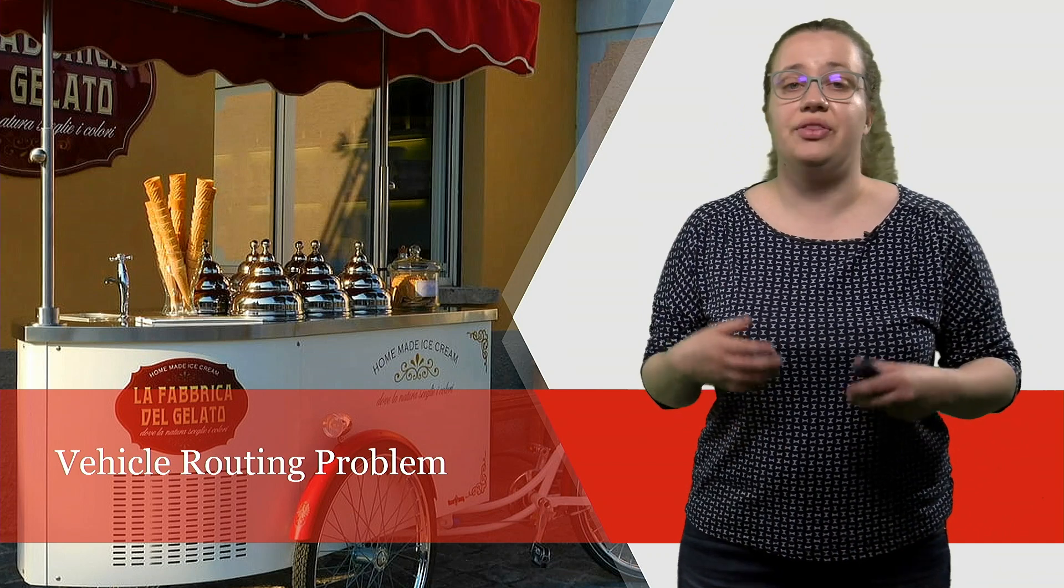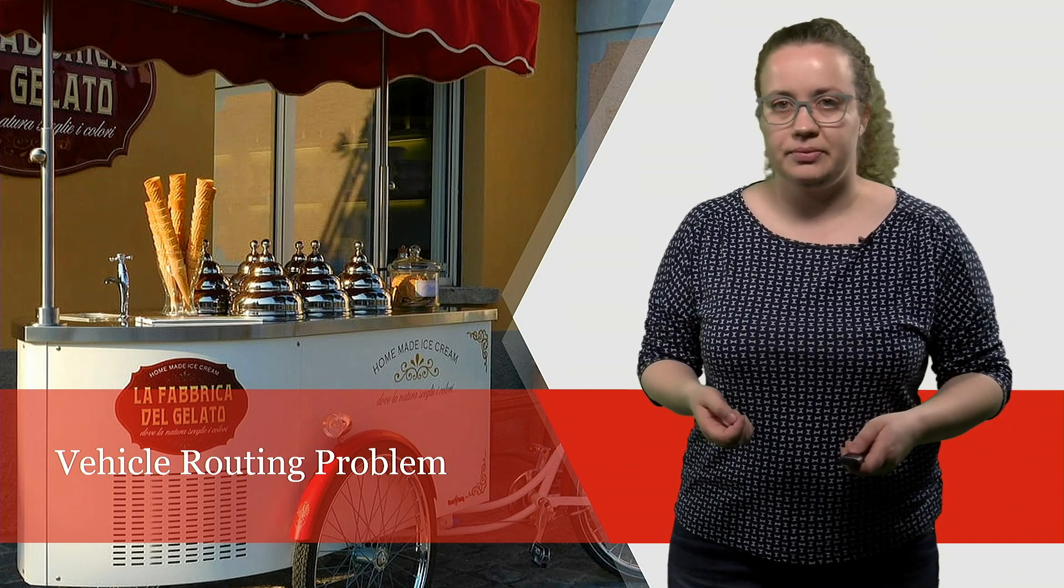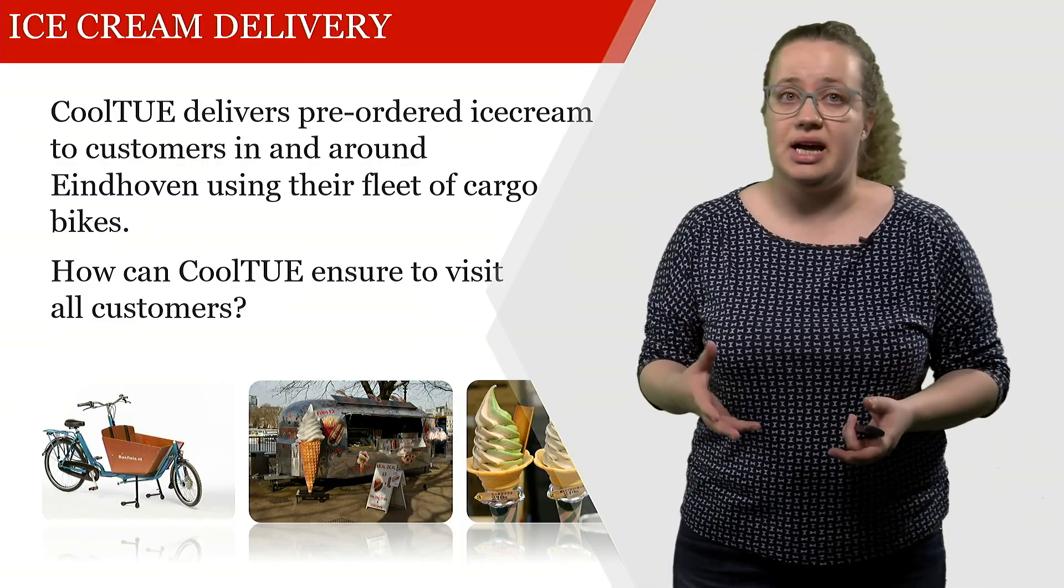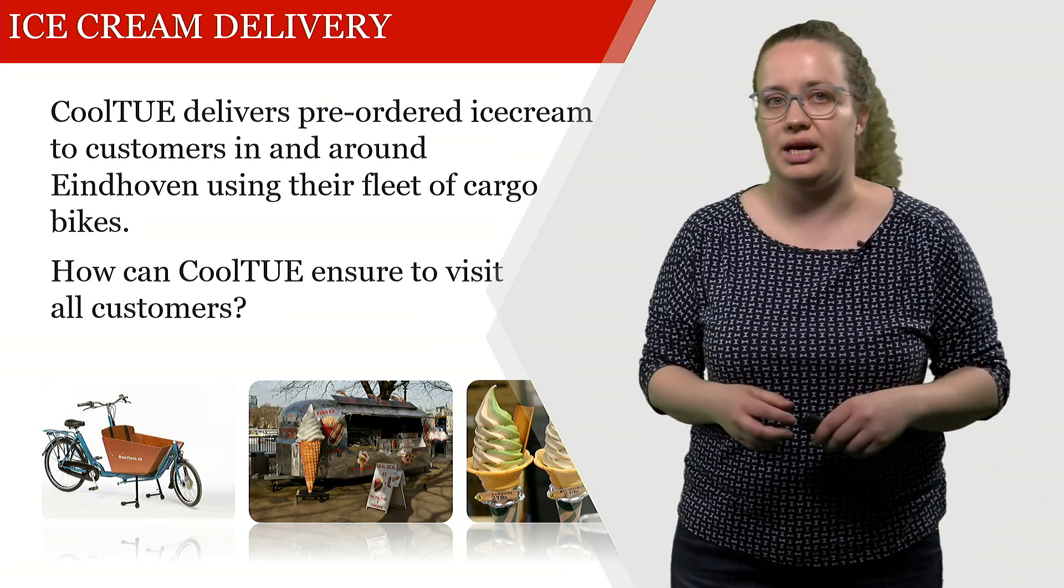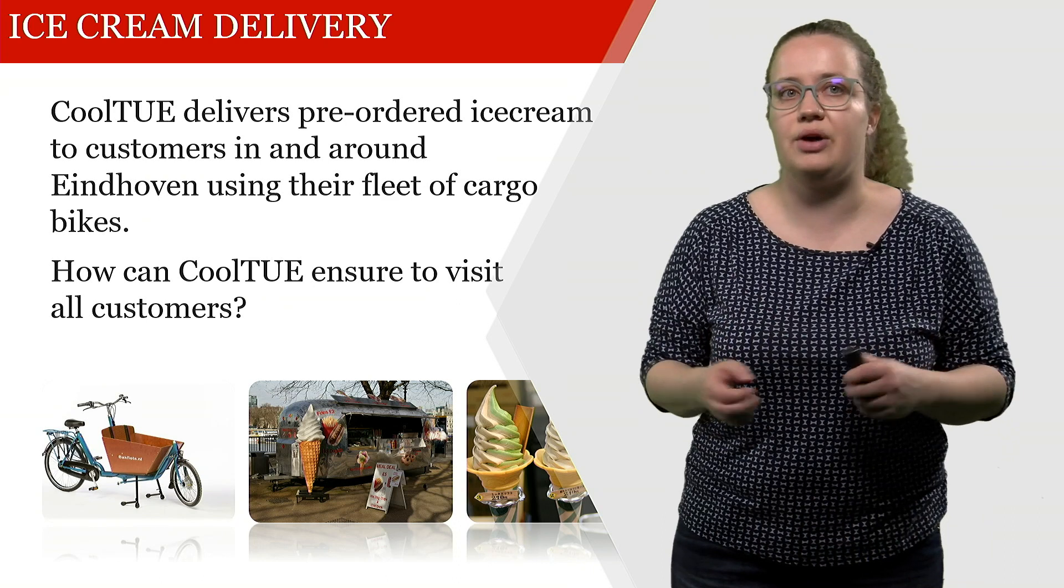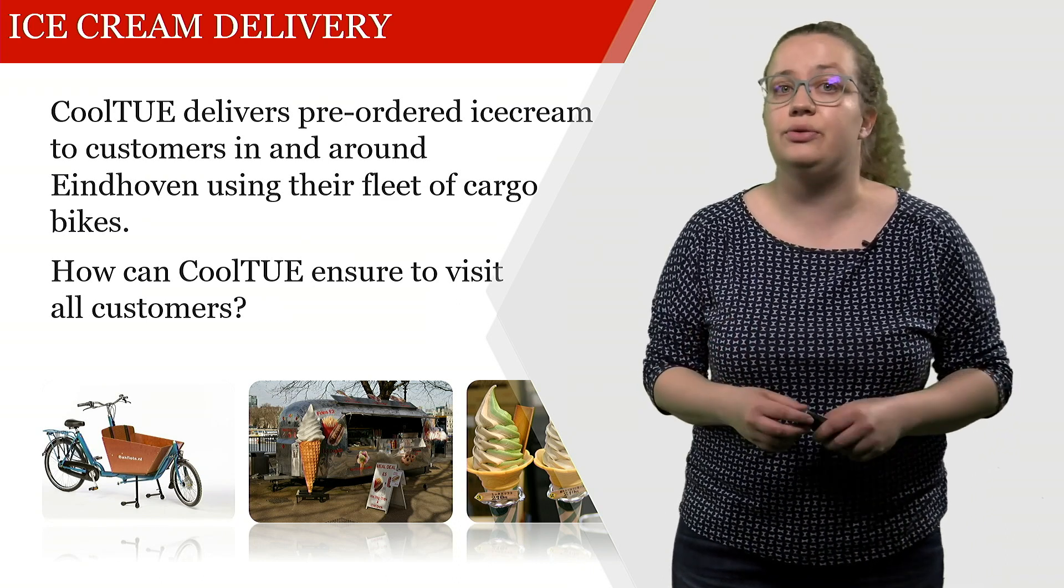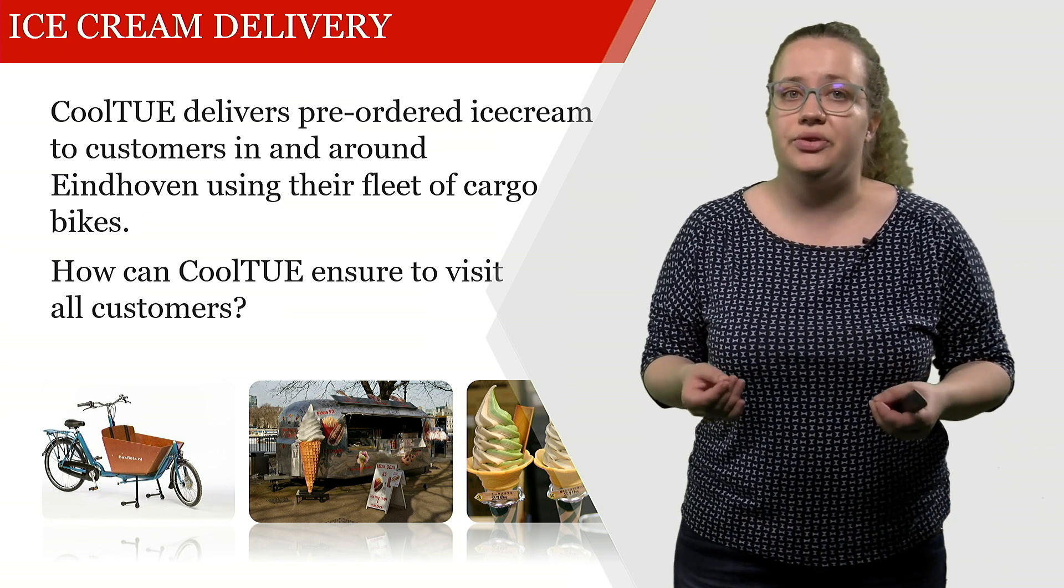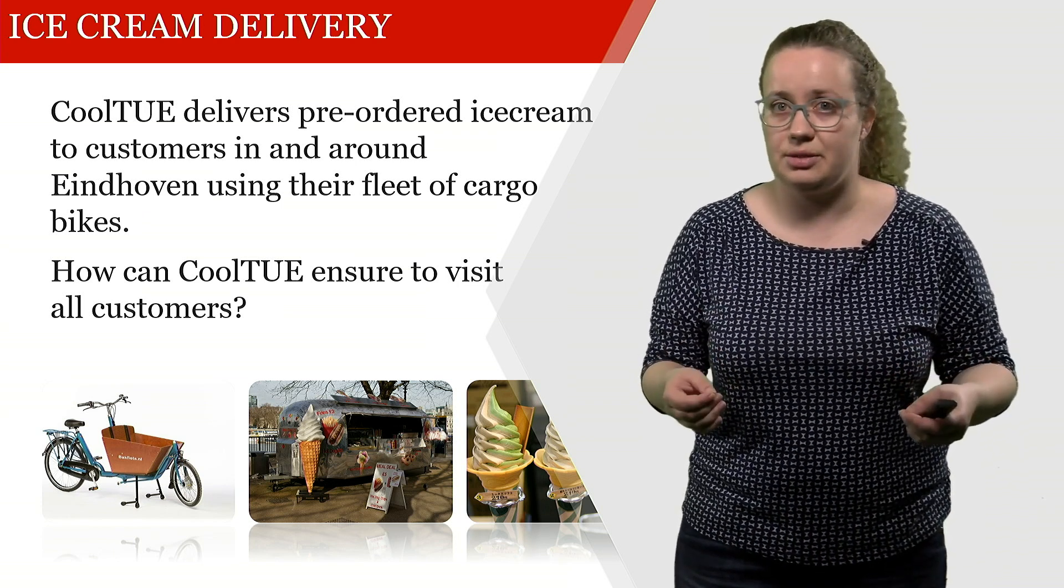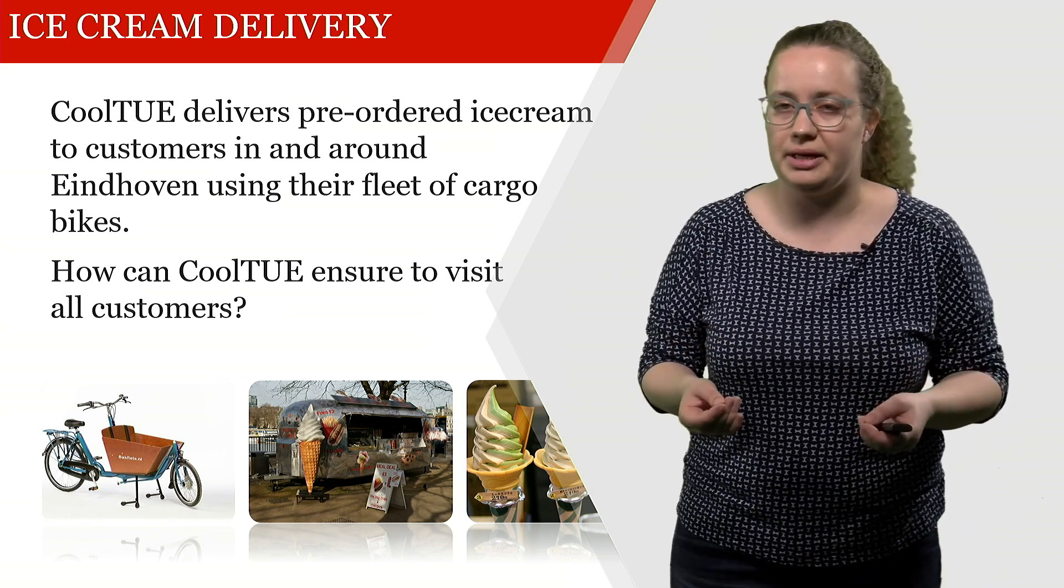Welcome to this web lecture on the vehicle routing problem. We're looking into an example of CoolTOE, which delivers pre-ordered ice cream to customers in and around Eindhoven using a fleet of cargo bikes. The question is, how can CoolTOE ensure to visit all customers with their fleet of cargo bikes?